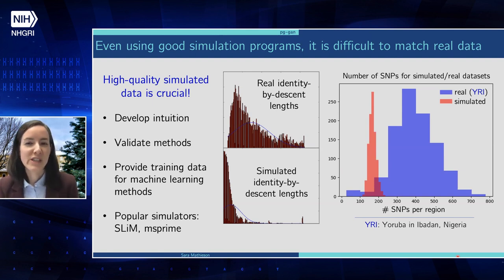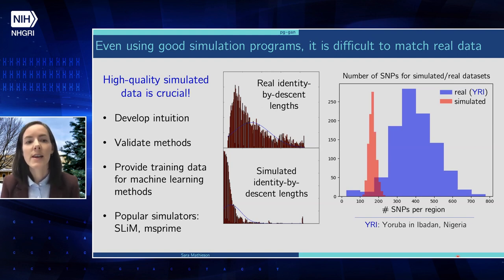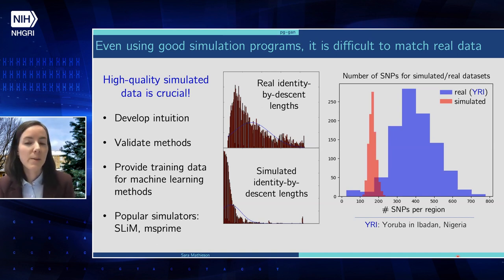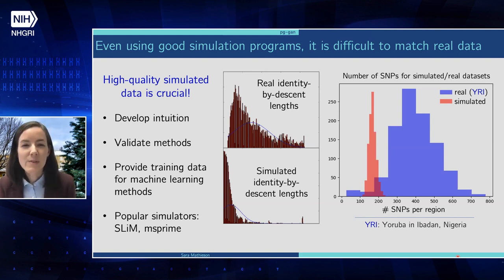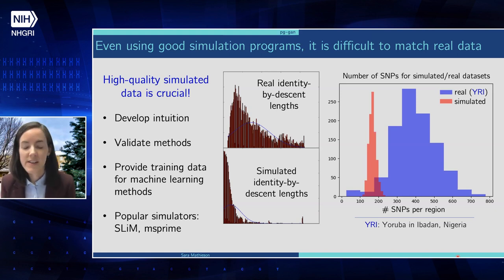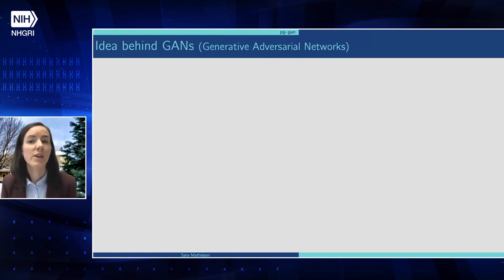The role of simulated data in population genetics cannot be overstated. It is useful not only for training machine learning methods, but for validating methods and developing intuition — it's extremely important. Many simulation programs have been developed over the years. Two of the most popular right now are SLiM and MS prime. These programs work very well at recapitulating evolution, but they do require many input parameters, and it can be very difficult to identify the best ones. Here are some examples where this approach didn't really work well.